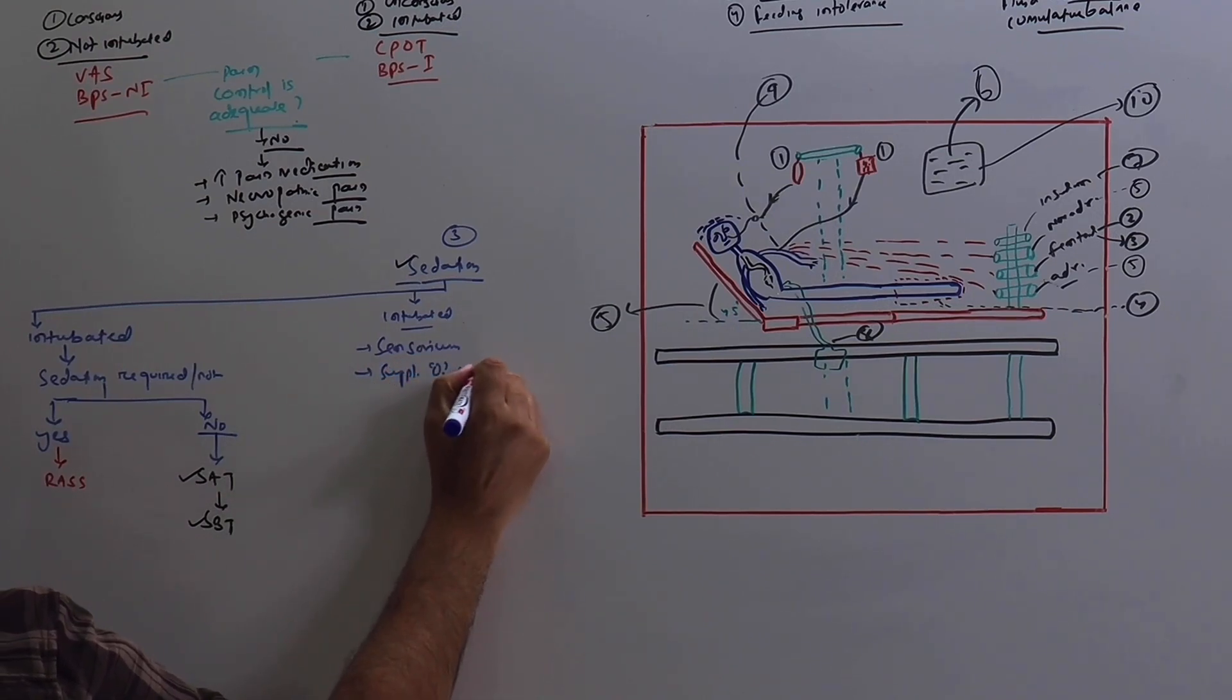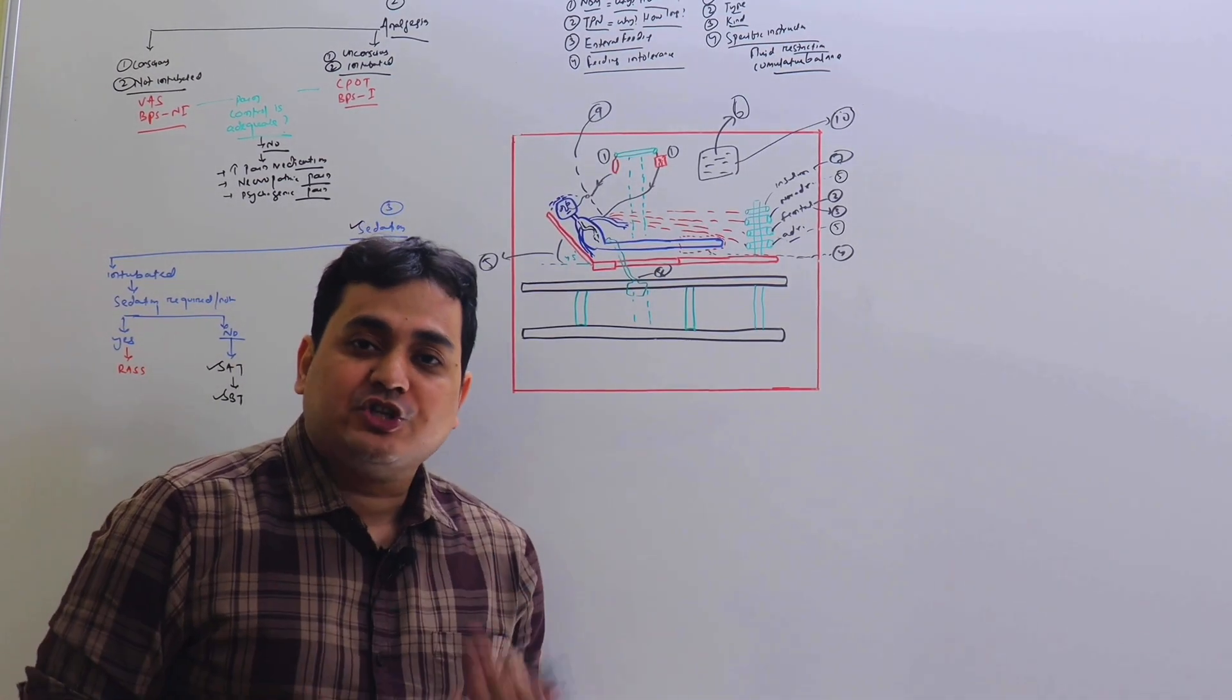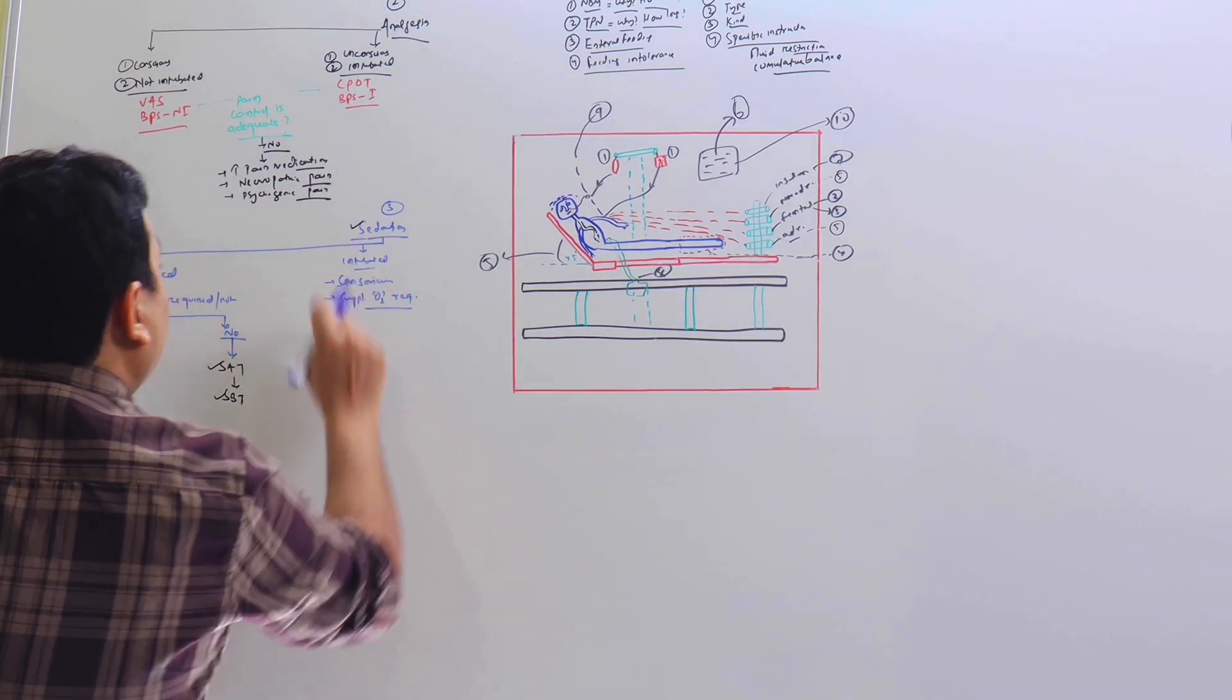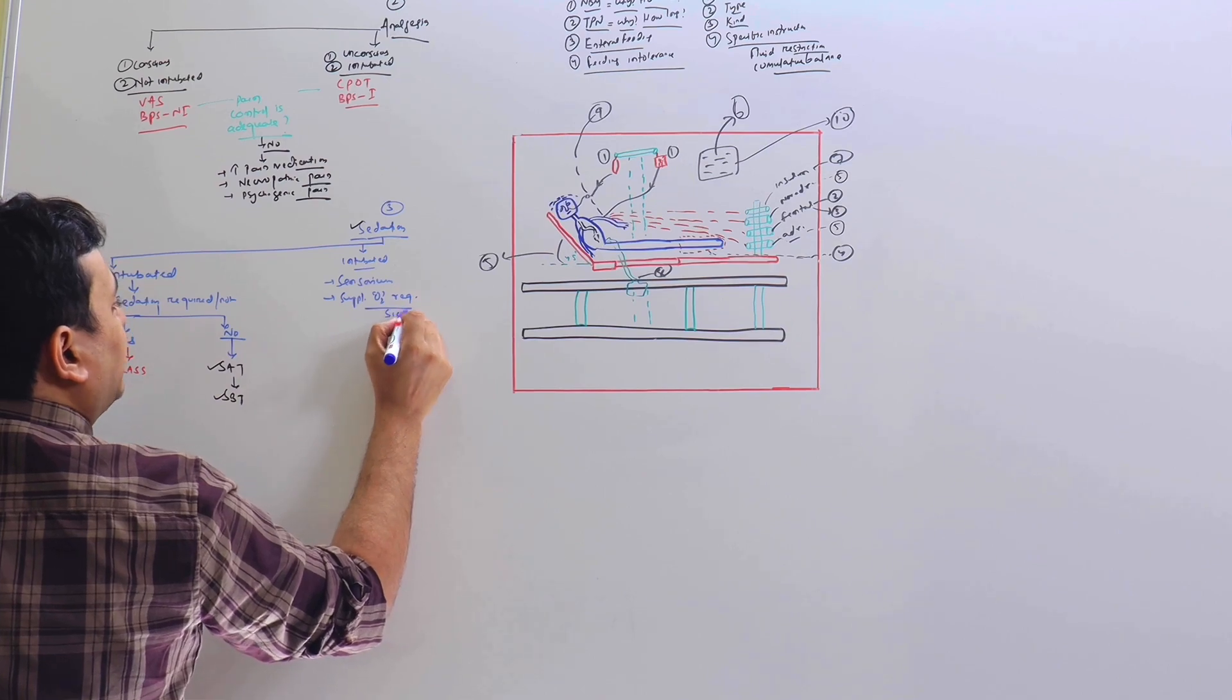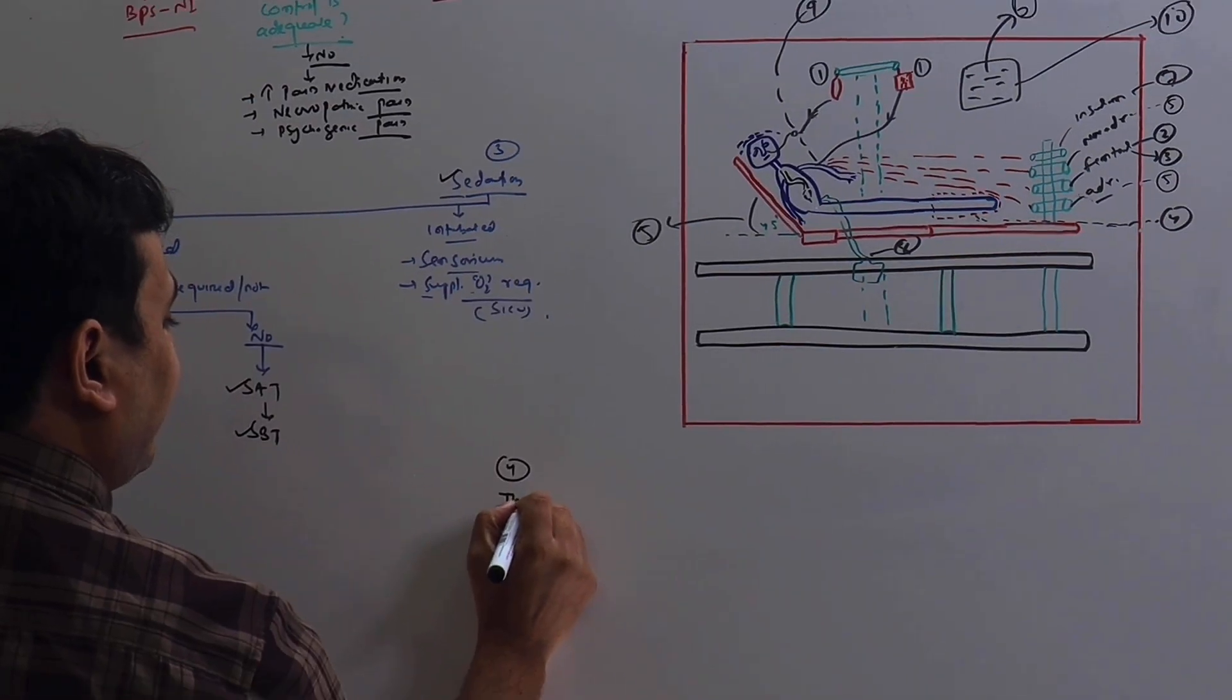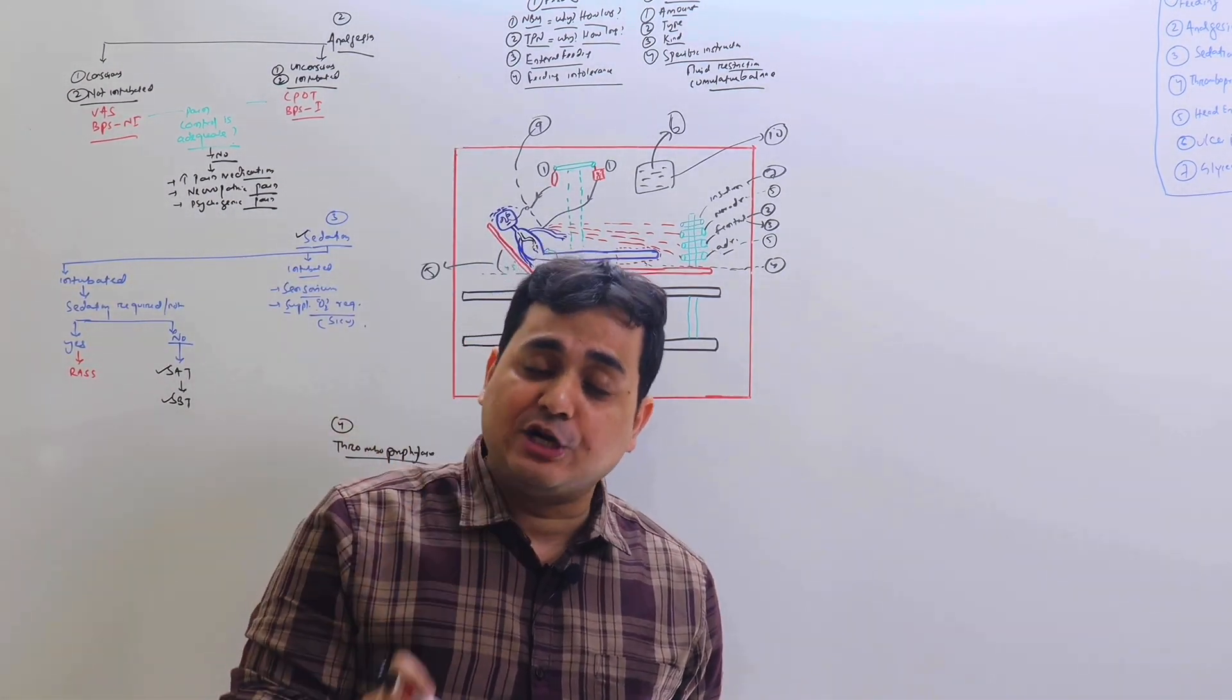If patient is not intubated, the same 'S' will stand for sensorium. The same 'S' will stand for supplemental oxygen requirement, especially in the post-operative, in the post-surgical ICU patient. If the patient is requiring supplemental oxygen, you need to find out why. The most common cause may be atelectasis. So 'S' stands for supplemental oxygen requirement, especially in the surgical ICU.